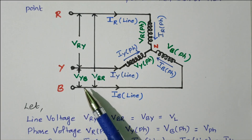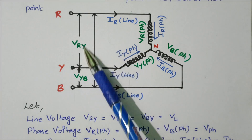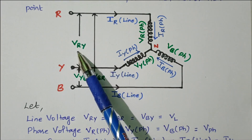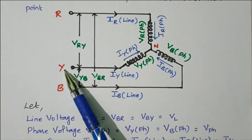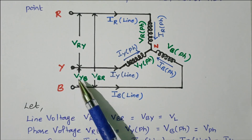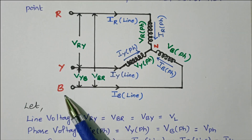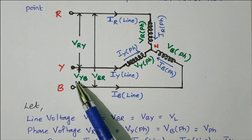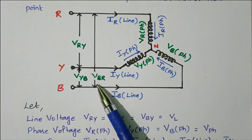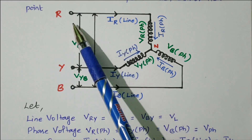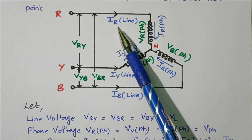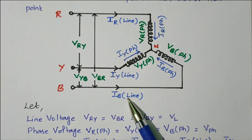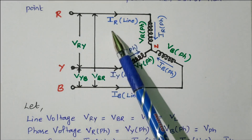Now we will refer the line voltage and phase voltage. This side is called line voltage or line current; inside the phase it is called phase voltage or phase current. V_RY is the line voltage between R phase and Y phase. V_YB is the line voltage between Y phase and B phase. V_BR is the line voltage between B phase and R phase. I_R_line, I_Y_line, and I_B_line are the three line currents. These three are line voltages and these three are line currents.